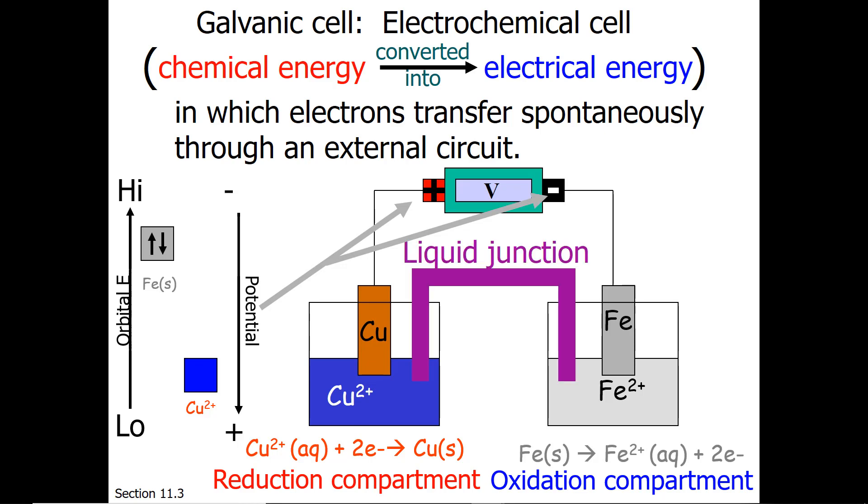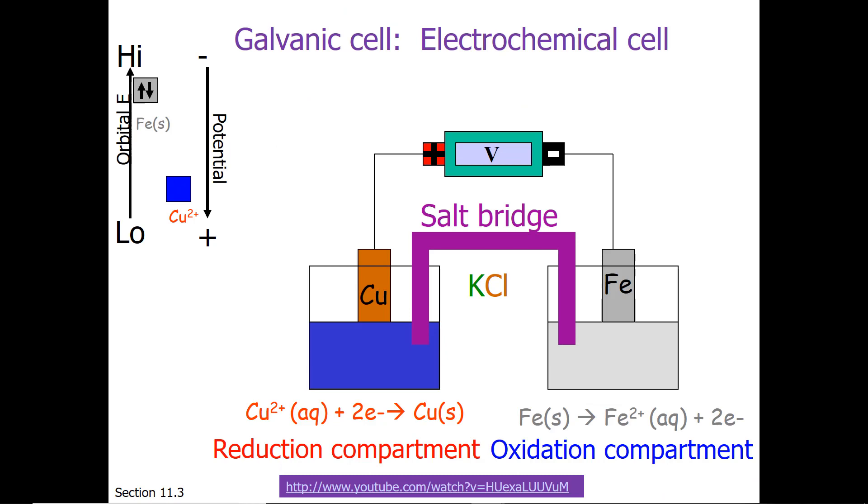The last piece is the liquid junction. The liquid junction is needed to make the ion concentration in the solutions remain constant. The liquid junction is also sometimes called the salt bridge, and it's full of an ionic compound that does not participate in the electrochemical reaction.